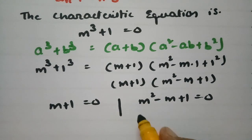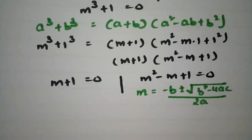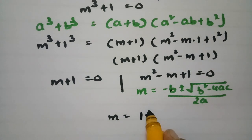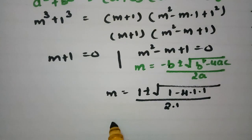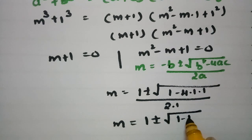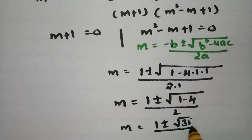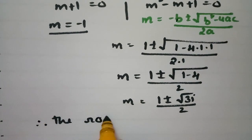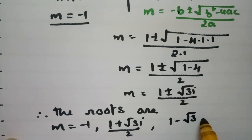To find the roots of m² − m + 1 = 0, we use the quadratic formula: m = (−b ± √(b² − 4ac)) / 2a. Substituting, m = (1 ± √(1 − 4)) / 2 = (1 ± √(−3)) / 2 = (1 ± √3 i) / 2. So the roots are m = −1 and m = (1 ± √3 i) / 2.